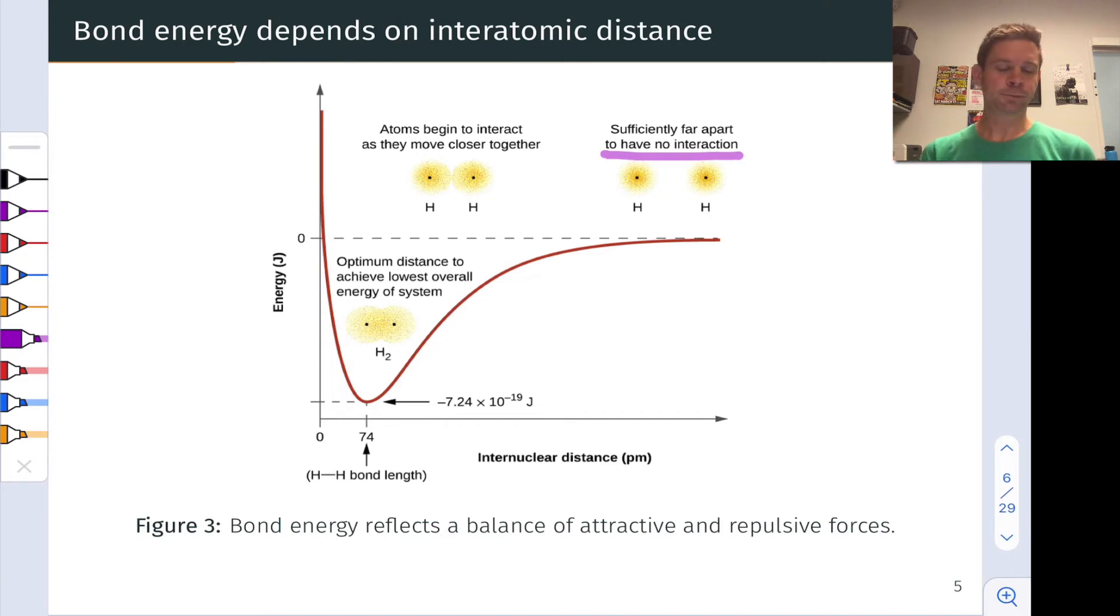As the atoms move close to each other, their orbitals start to interpenetrate. We start to get overlap between the 1s orbitals on each of those hydrogen atoms. This causes a stabilizing effect, as well, because the negatively charged electrons, for example, here and here, are coming closer to the positively charged nucleus of the other hydrogen atoms.